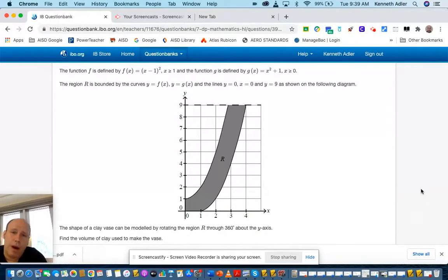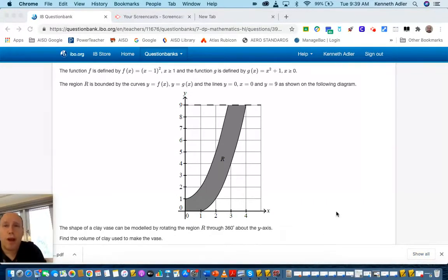The shape of the clay vase can be modeled by rotating this R through 360 degrees around the y-axis. Find the volume of clay used to make the vase. We're actually going to make this using technology. You can imagine a thick vase, like you've made it in pottery class, a vase with a thick rim. The question is, how much clay do we need to make that vase? And this is a cross-section.